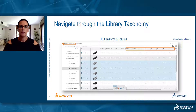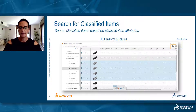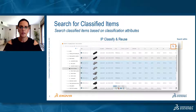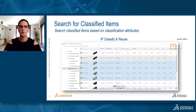Now, if the list is too long and you want to search for a specific component based on some criteria or classification attributes, you can enter the search syntax manually into the Search Within tool available in the toolbar of the IP Classify and Reuse application.